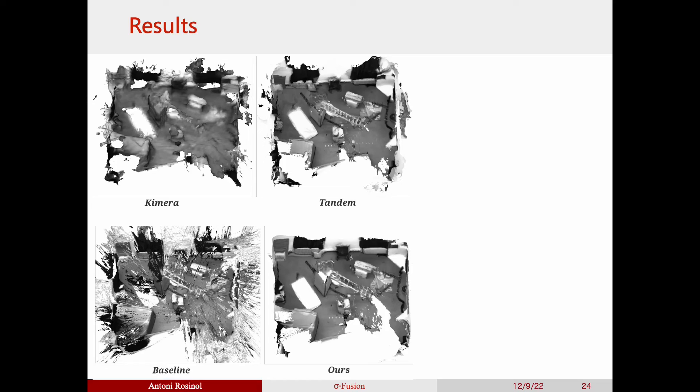Comparing this more in detail, we see that Chimera builds rough 3D reconstructions, while Tandem achieves more crisp results. Our baseline, which volumetrically fuses the depths from Droid SLAM, results in inaccurate 3D reconstructions, while ours achieves the best results in terms of accuracy.